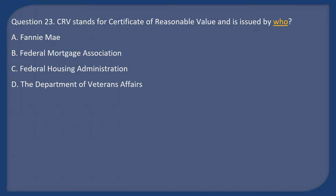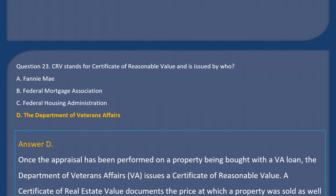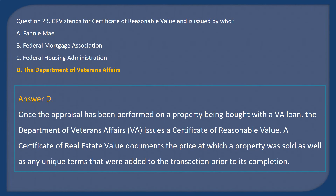Question 23: CRV stands for Certificate of Reasonable Value and is issued by who? A. Fannie Mae. B. Federal Mortgage Association. C. Federal Housing Administration. D. The Department of Veterans Affairs. Answer: D. Once an appraisal has been performed on a property being bought with a VA loan, the Department of Veterans Affairs issues a Certificate of Reasonable Value — a document reflecting the price at which a property was sold as well as many unique terms added to the transaction prior to its completion.